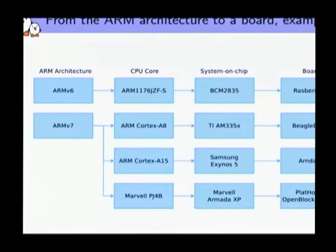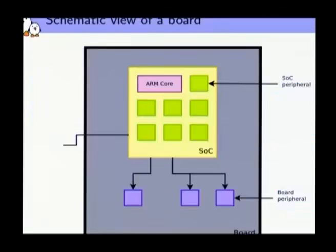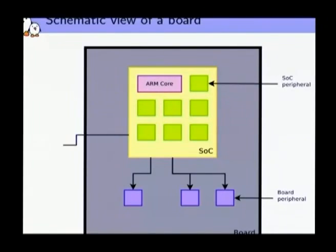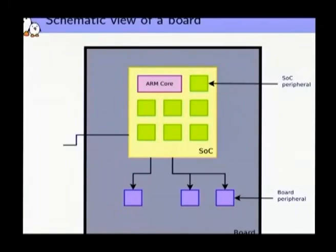There's a huge variety, and that's kind of specific to the ARM architecture. It makes it really fun, but it also means you need to handle this variety. In a very high-level view, when you work with an ARM hardware platform — be it your phone, your TV, or a development board like the BeagleBone or the Raspberry Pi — it's very important to always have this vision of what you're using. You're using a board that has several components: some RAM, some flash, some Ethernet connectors, I2C thermometers, accelerometers, or other components — those are the on-board peripherals.